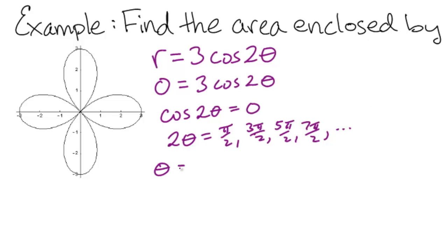So theta is going to be pi over 4, 3 pi over 4, 5 pi over 4, and 7 pi over 4, which is predictable from the graph.